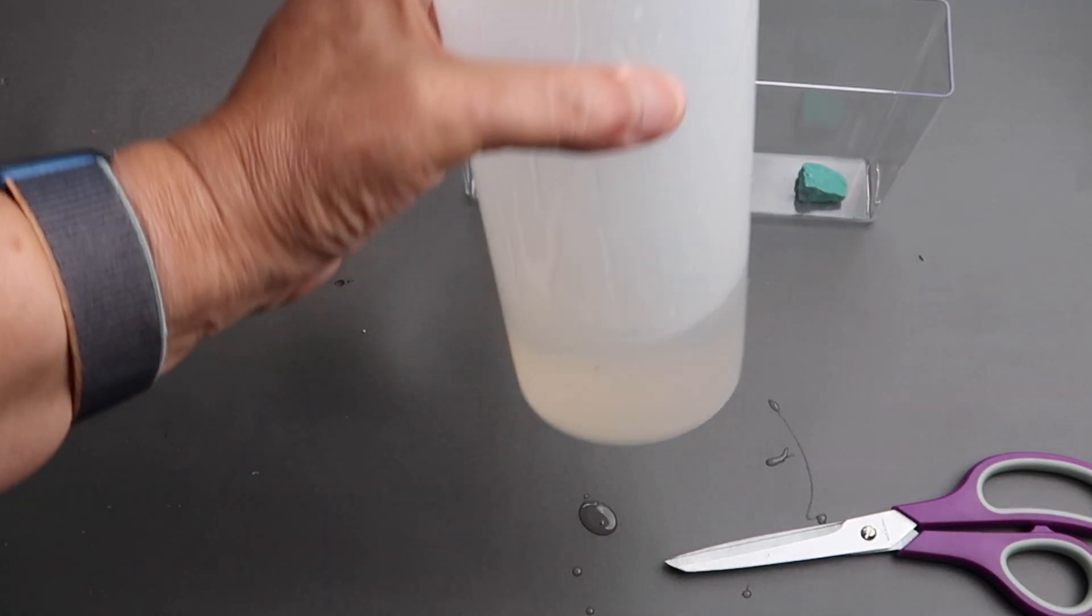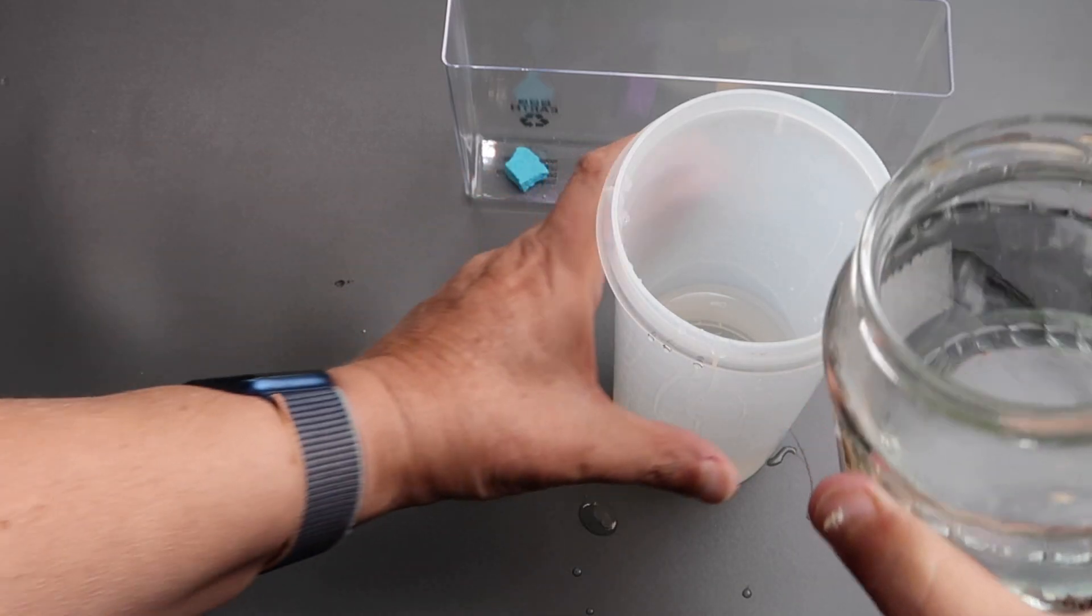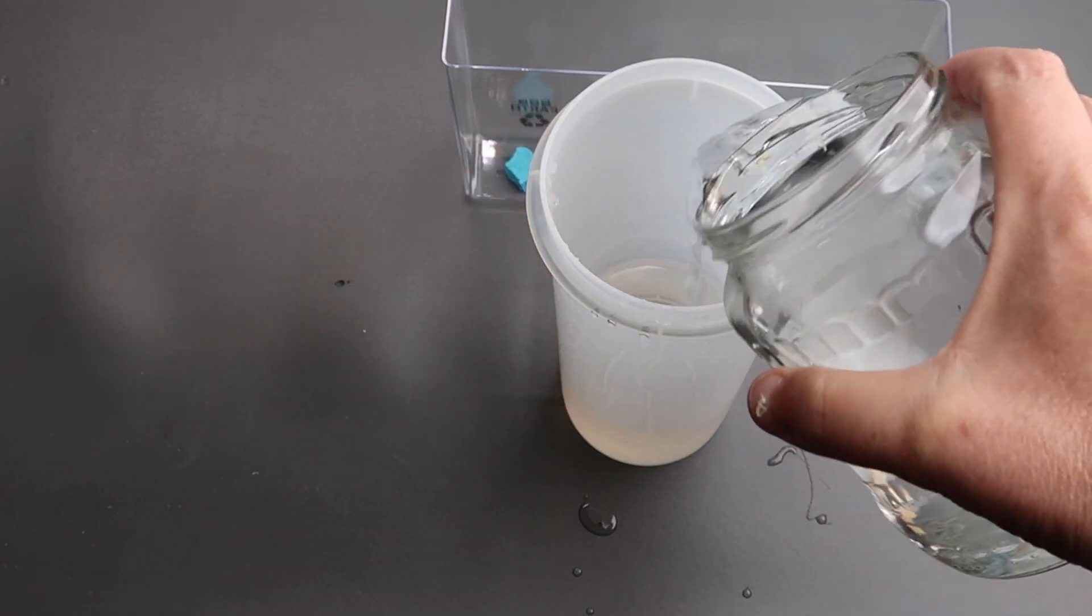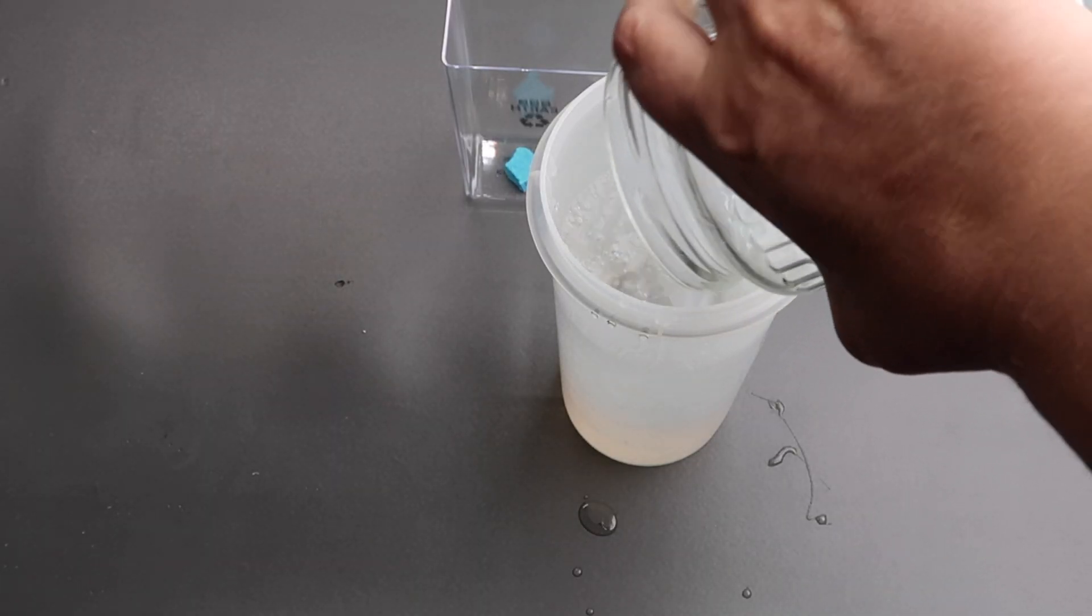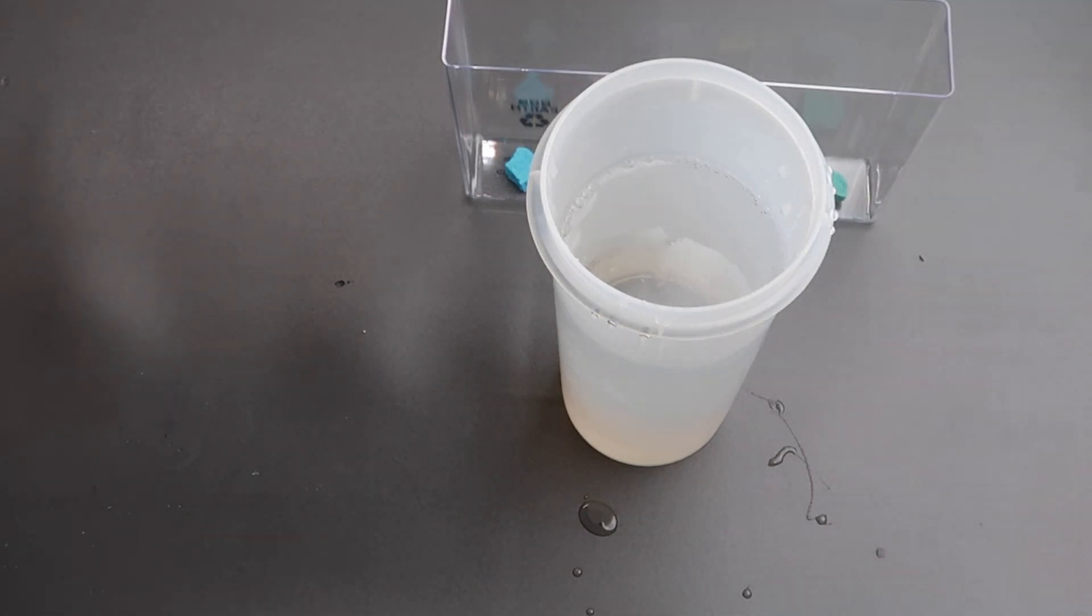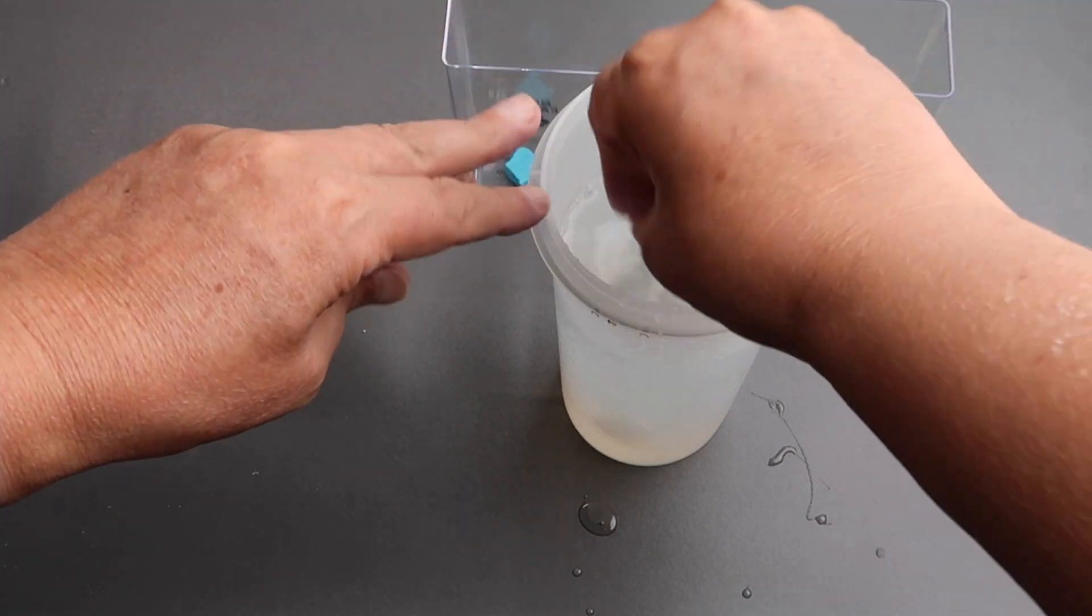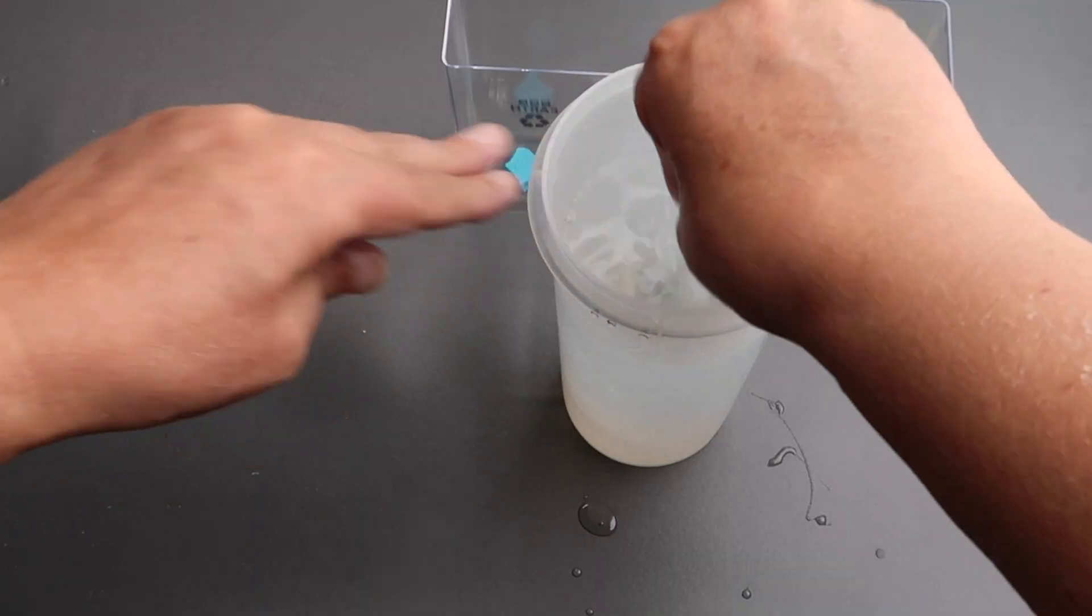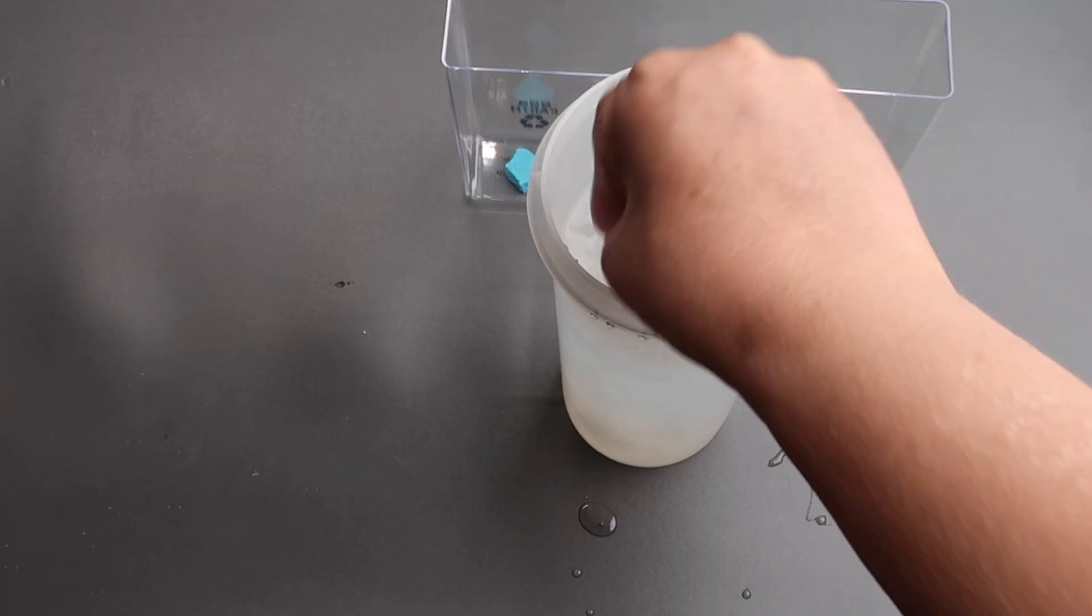And now we have all this gel in here and then we need to add three cups of lukewarm water. I've already measured out three cups here. Add the three cups. As you can see, you need a pretty large container to hold it in. Then mix it until all the sediment is gone and all gone into solution.